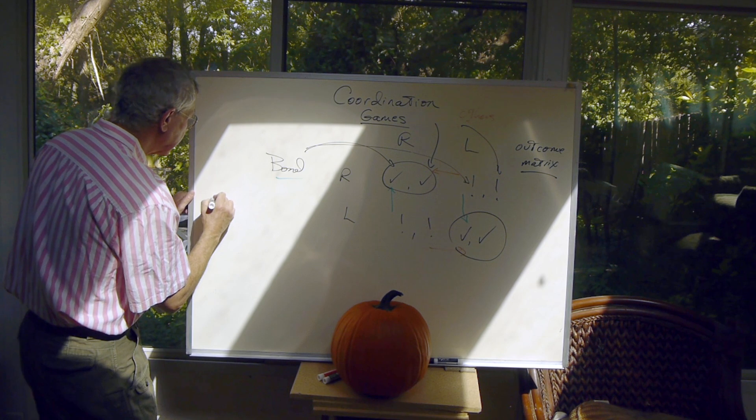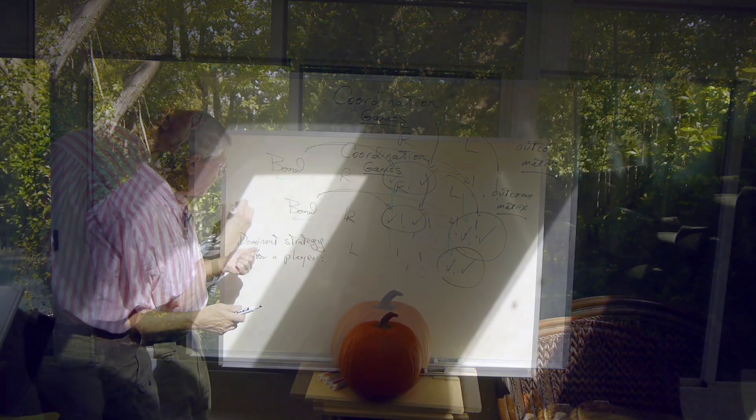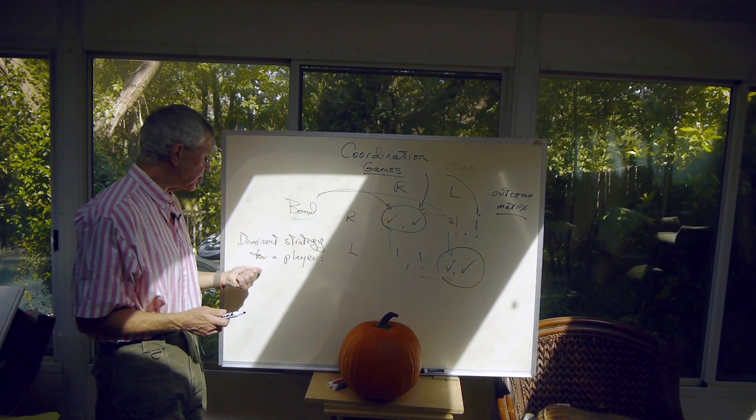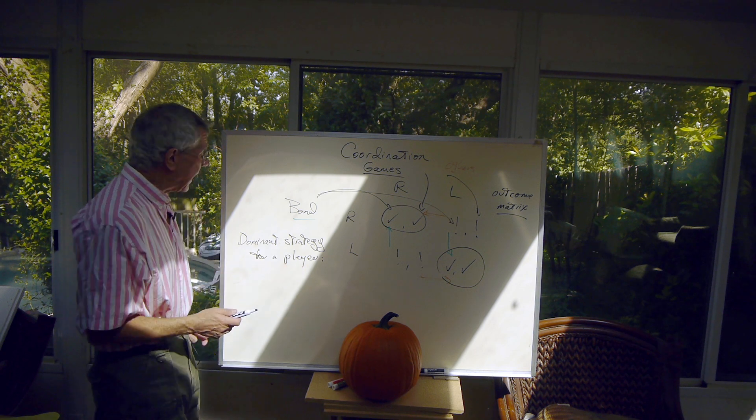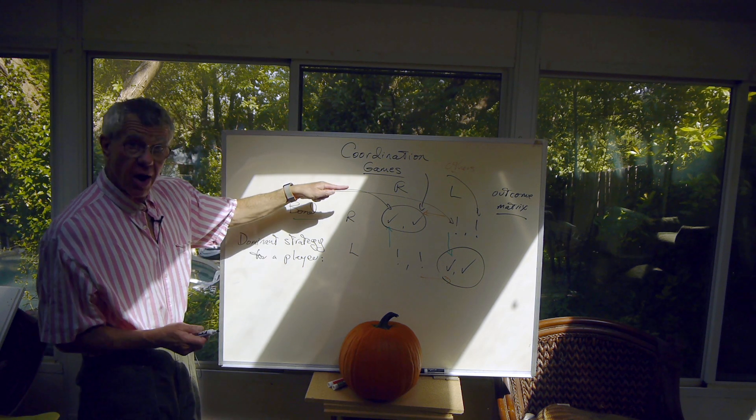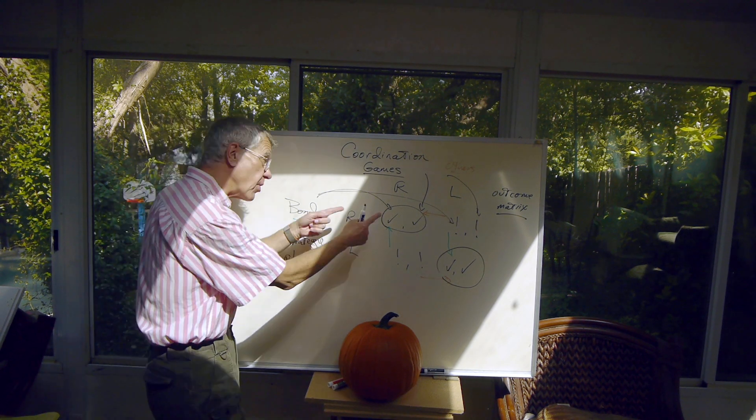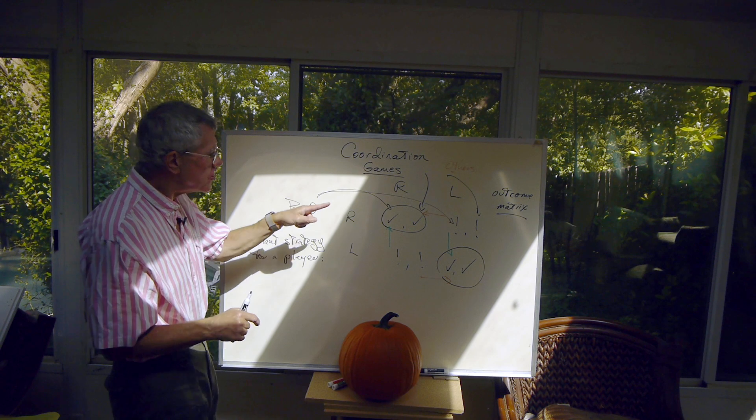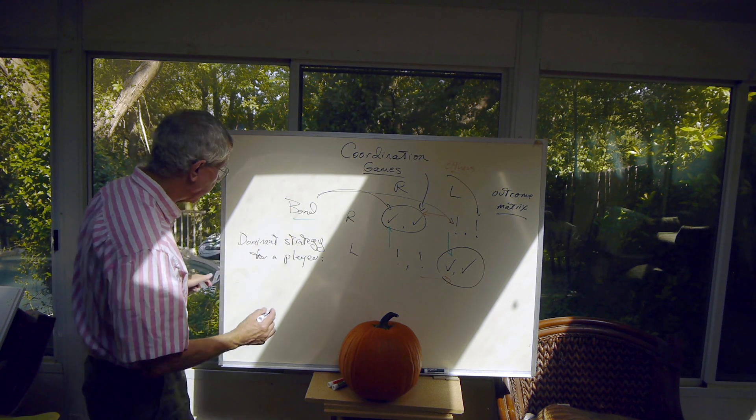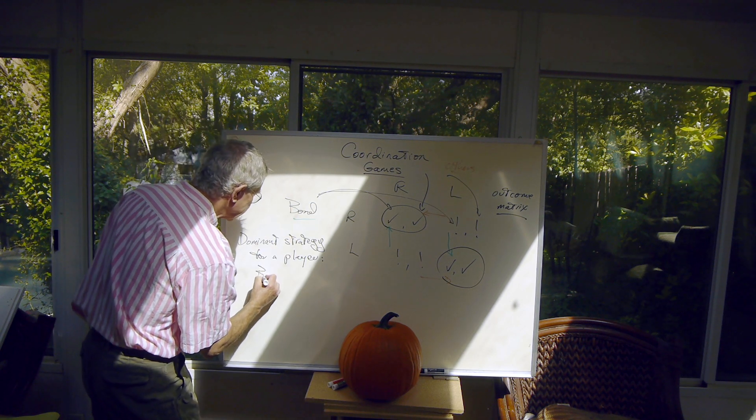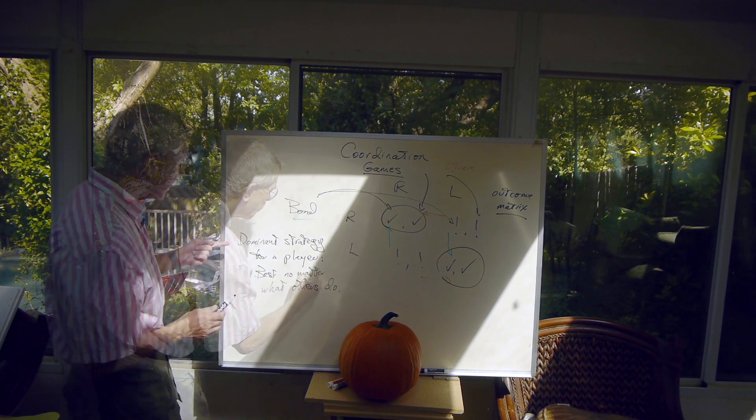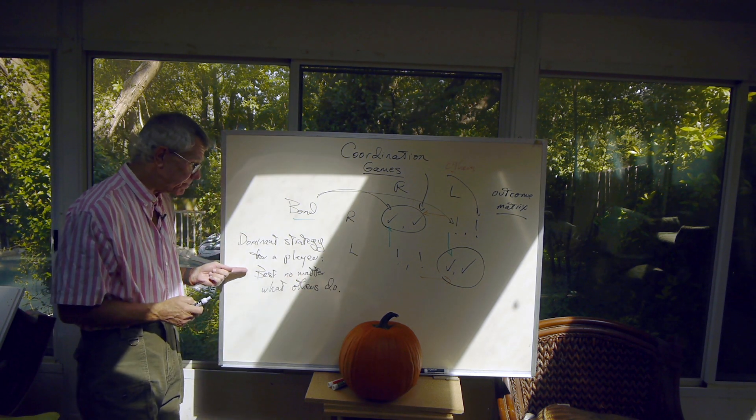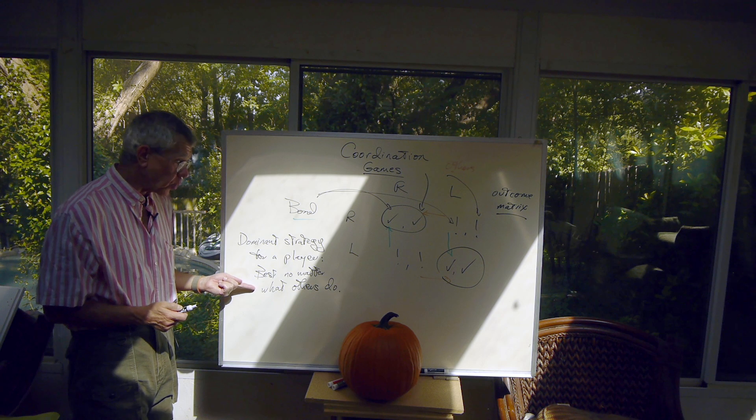So we can come up with a key concept of game theory, and that is the idea of a dominant strategy. A strategy is a dominant strategy for a player in a game if they are better off using that strategy, they're better off making that choice than any other alternative no matter what other players are doing. So you might say it's best no matter what. A dominant strategy for a player is best for that player, no matter what others do.